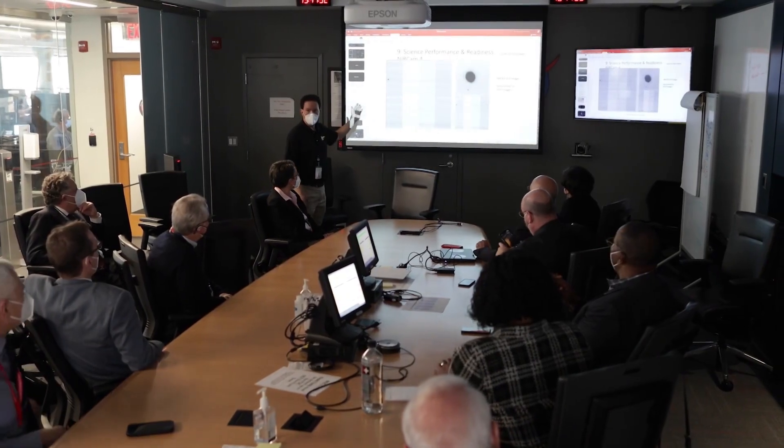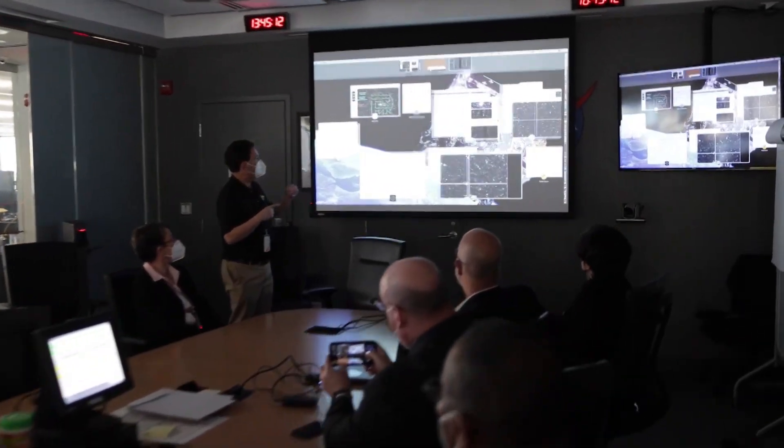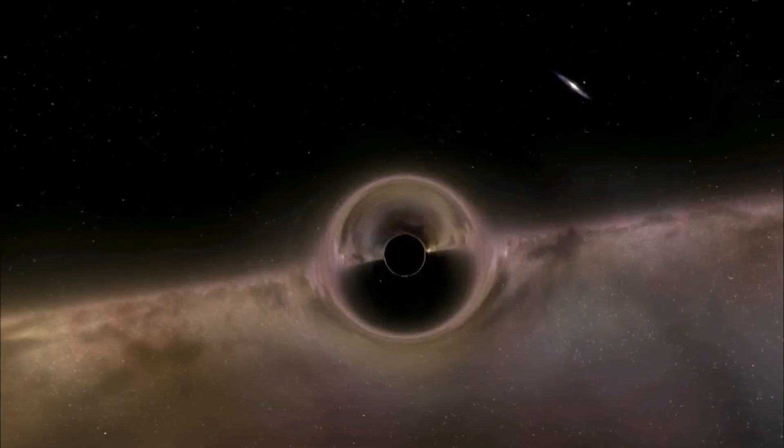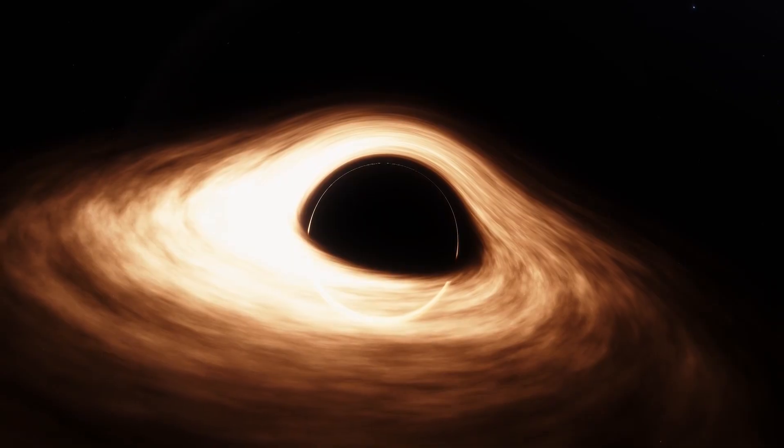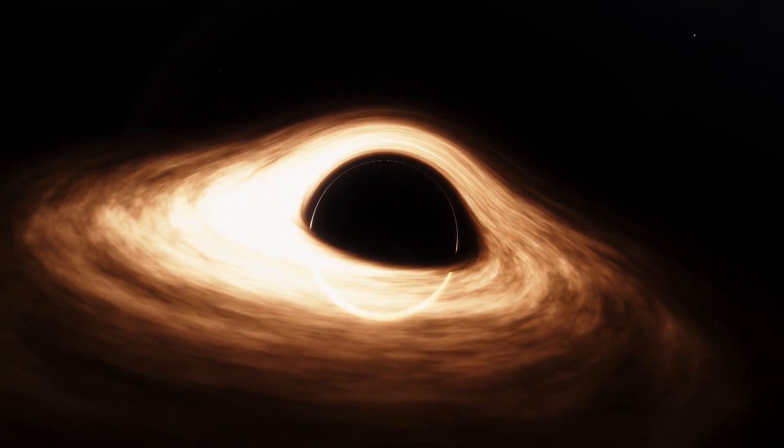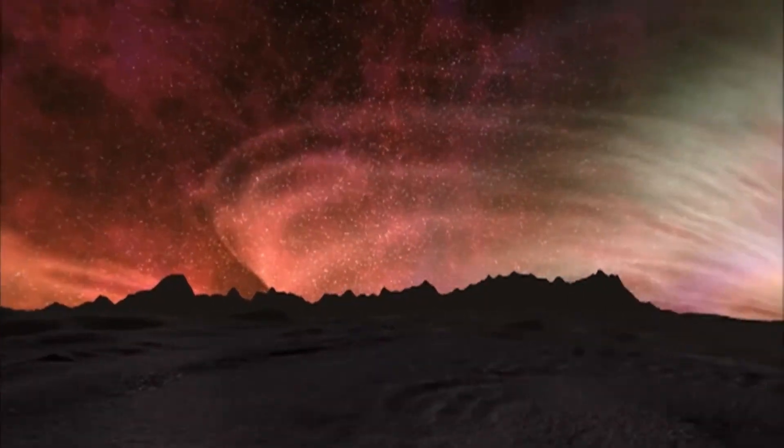The problem is that scientists cannot study black holes in the same way they study stars or other planets. They can't just look at the radiation they emit, along with the dust and gas that surrounds them. They cannot send something like the Voyager probe into the interior of a black hole, since it would be crushed when it reached the singularity. Simply put, our only option is to study these massively powerful phenomena in space in two dimensions, since we cannot get close to them.